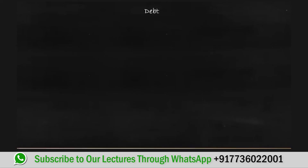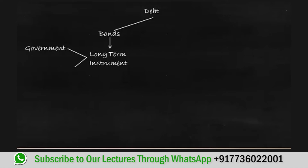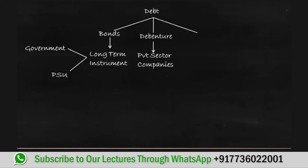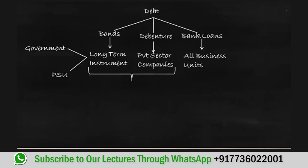Debts can be raised from various sources. An organization can raise debt by issuing bonds, which are long-term instruments that can be issued by the government or public sector units. Another form of debt is debentures, which are generally issued by private sector companies. The third form of debt is bank loans, which are raised by all business units.